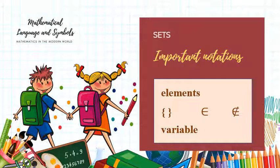Before that, we have important notations or symbols that we can use in sets. First, we have elements. The elements are the members of the set. To represent the elements, we need to enclose them in brackets.